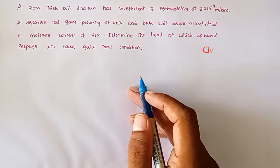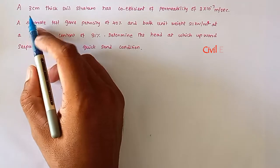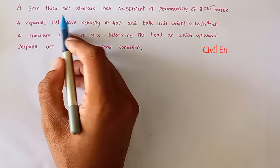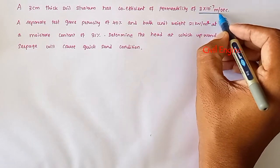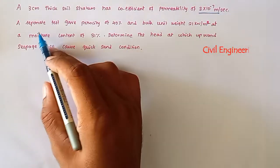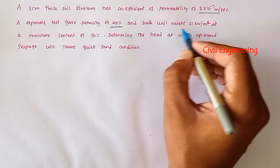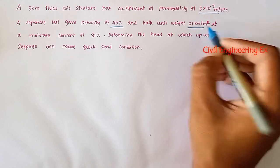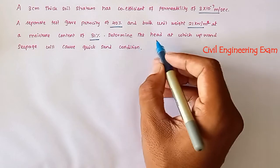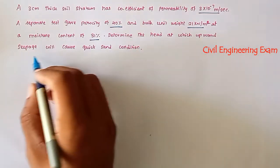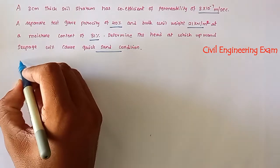Hello friends, welcome to Civil Engineering Exam. Today we are going to see a problem related to soil mechanics. The problem is: a three centimeter thick soil stratum has a coefficient of permeability of 3×10⁻⁷ meter per second. A separate test gave the porosity as 40% and the bulk unit weight is 21 kilo Newton per meter cube at a moisture content of 31%. Determine the head at which the upward seepage will cause the quicksand condition.